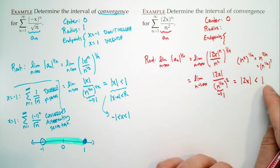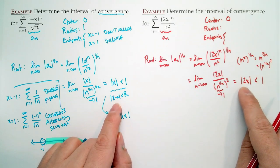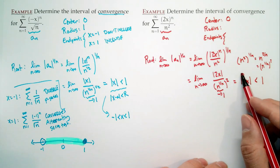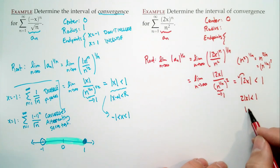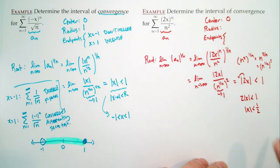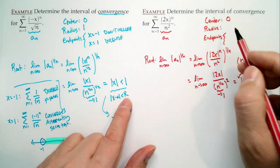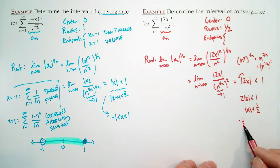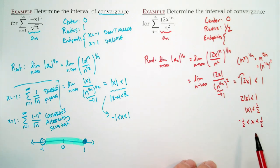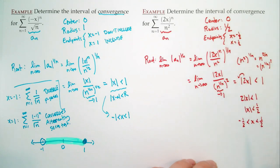Is our radius 1? No — be careful, because there's that 2 there. We can say 2|x| < 1, or |x| < 1/2. Now I'm in the form |x minus a| < r. So my radius of convergence is 1/2. Put another way: negative 1/2 < x < 1/2, it definitely converges. That means my two endpoints are at x equals negative 1/2 and x equals positive 1/2.